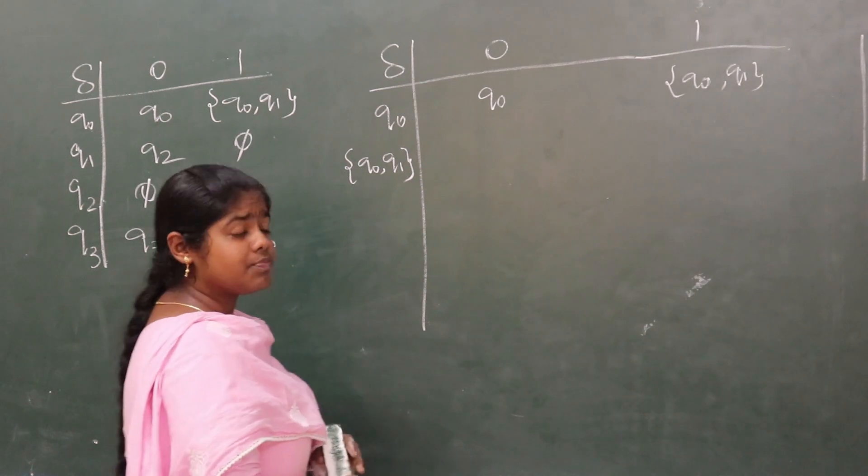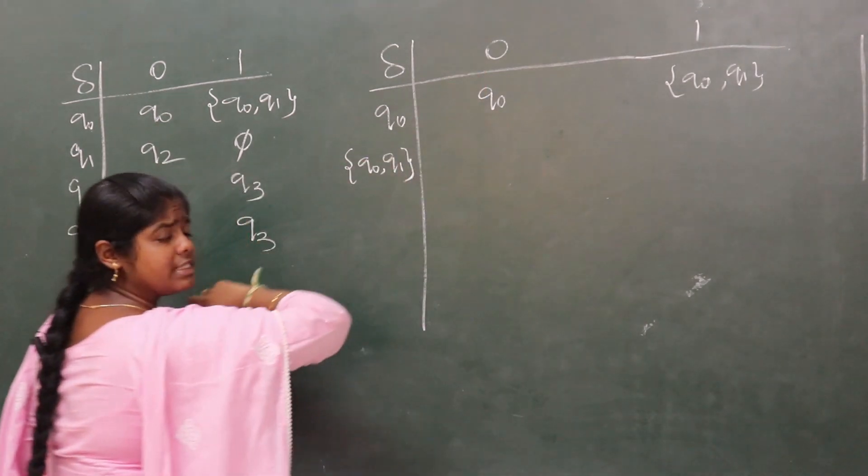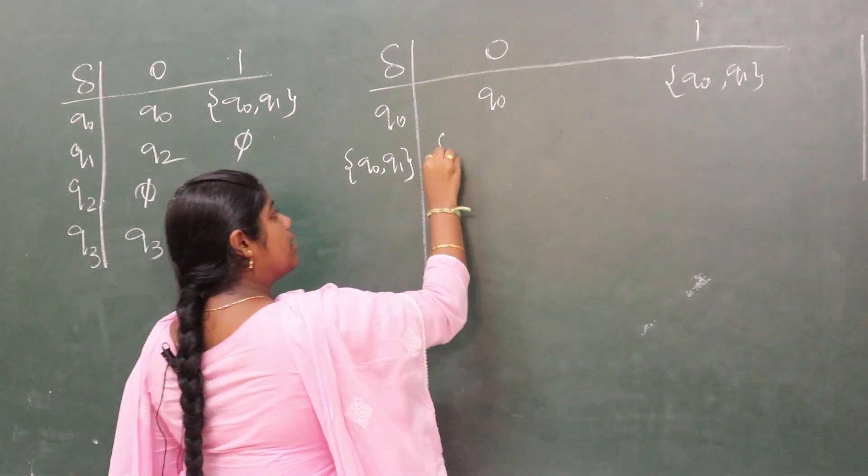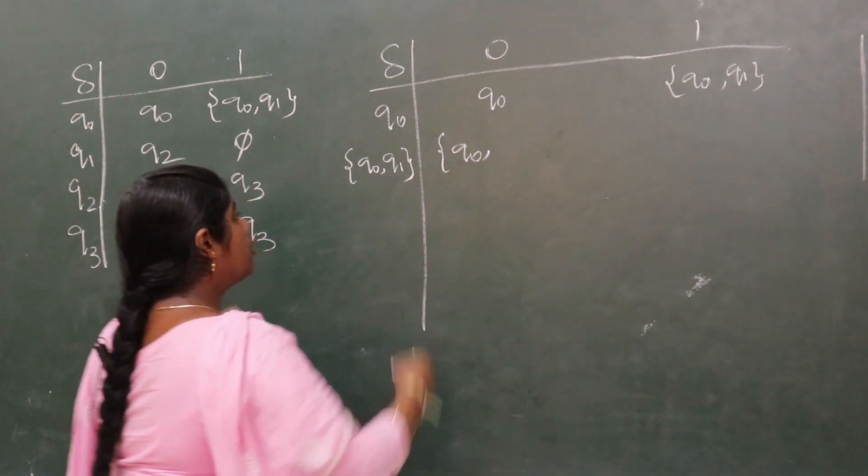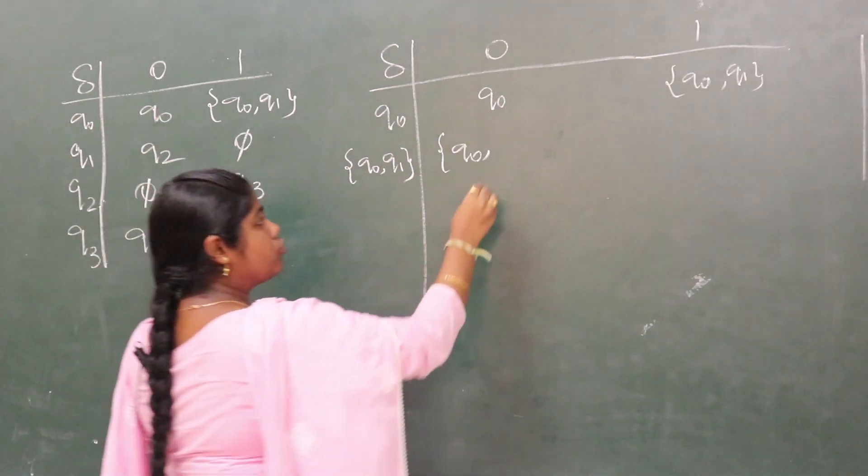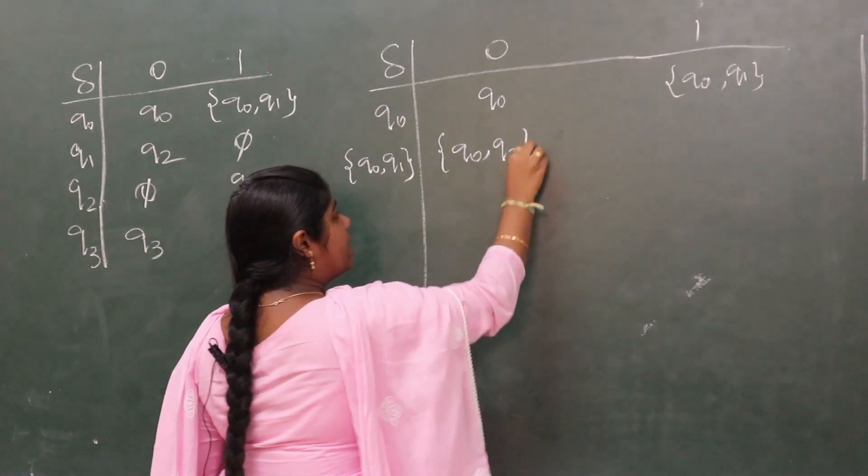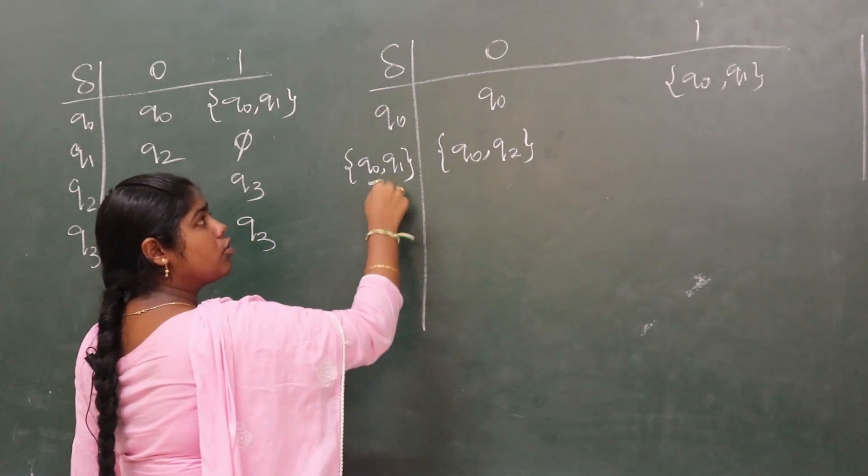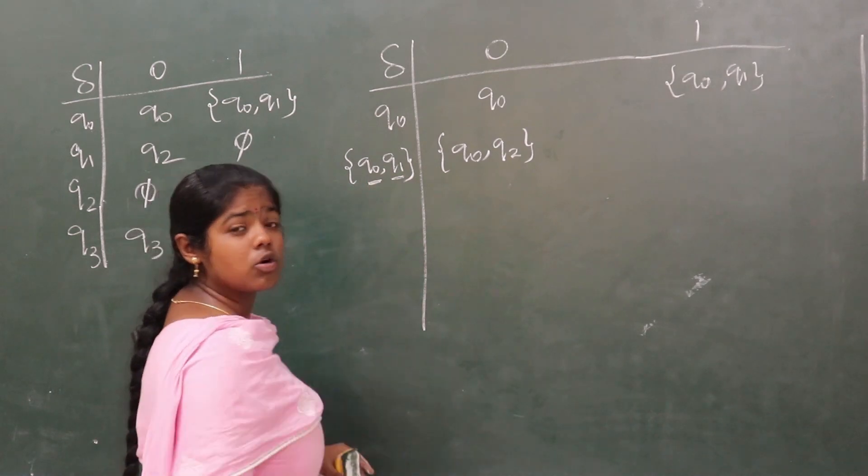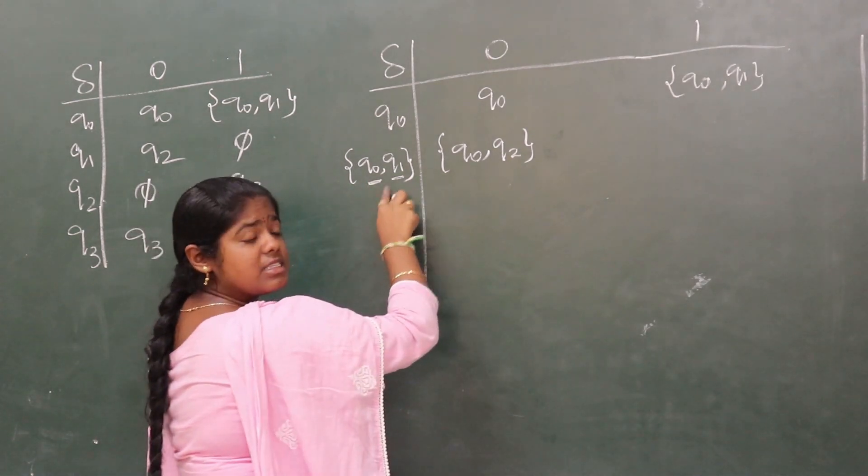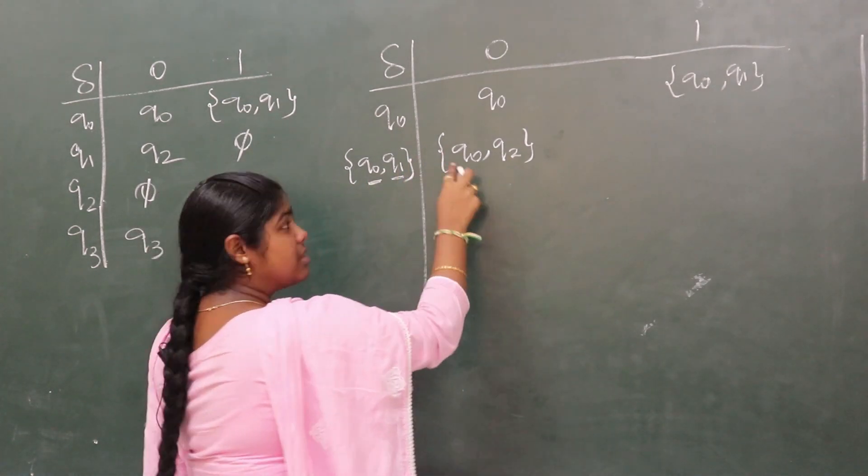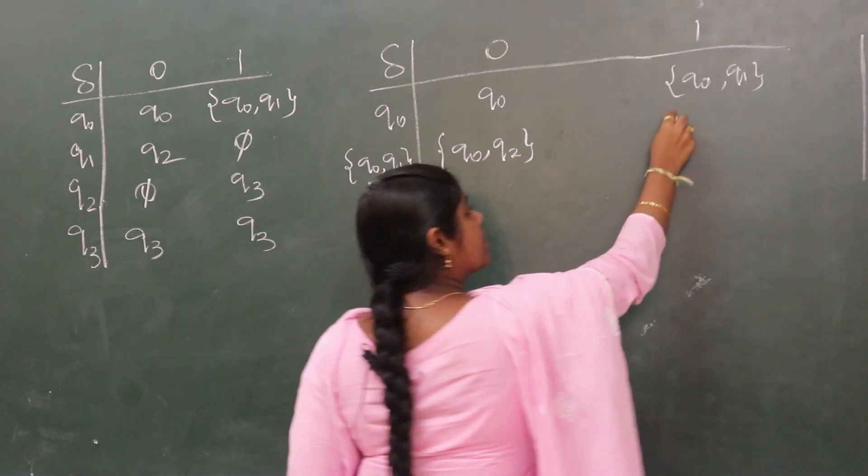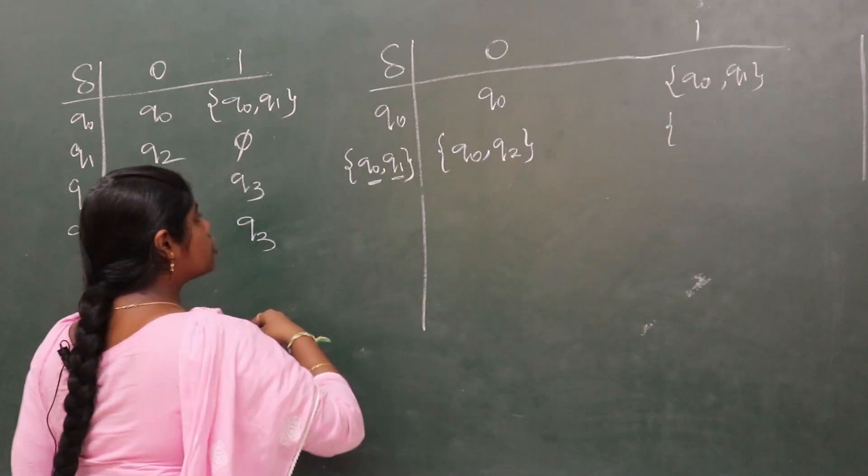After writing q0, q1, we check q0 on 0 transition goes to q0, and q1 on 0 transition goes to q2. This set contains the union of the transition of q0 on 0 and transition of q1 on 0. The union of these two states forms this set. This is the transition for q0, q1 state on 0 input variable. Similarly, we need to check for the 1 variable.